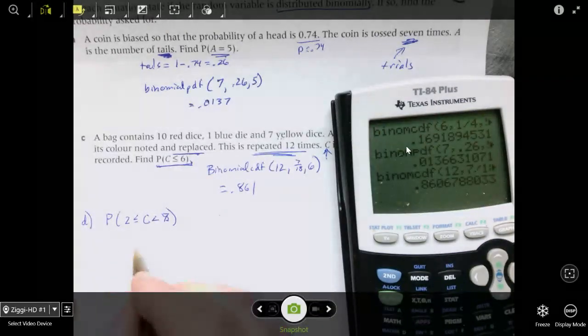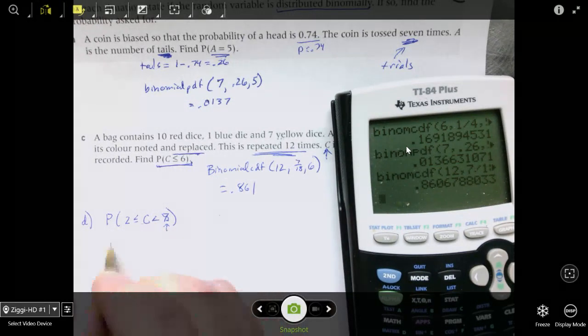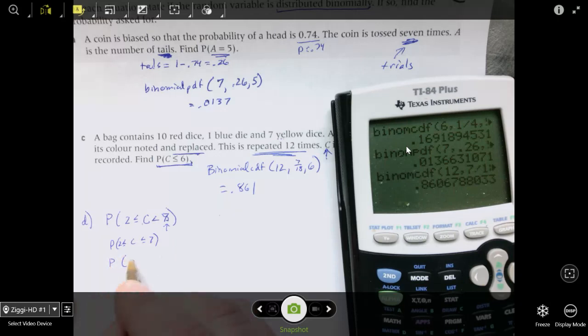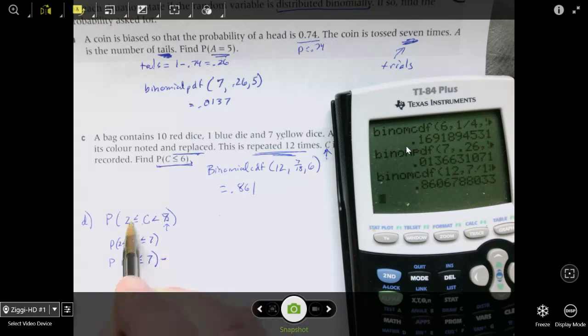So anything from 2 to 7 is in my group. So I'm taking out the 1 and 0, and I'm from this 7 or less. So again, binomial CDF because it's cumulative. And I'm doing the same number of trials. So I still have my 12. Same probability because it's the same question. So this is going to be 7. Okay, so that's 0.951.